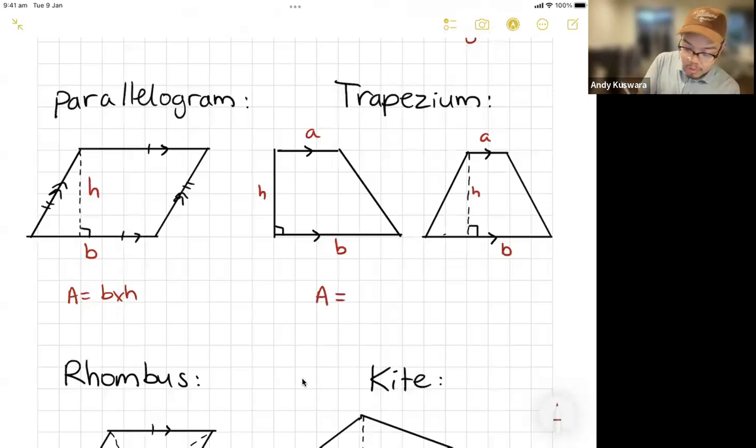It is an important formula. The way that this one works is a is h over two, a plus b. Okay. That's your trapezium formula.